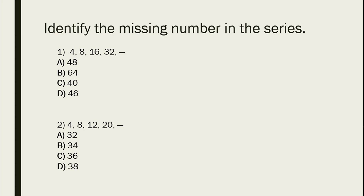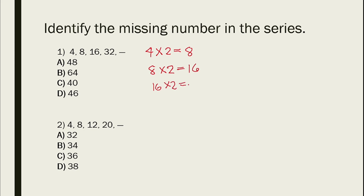As you have observed, these are just double numbers each time. The first is 4, so we multiply it by 2 that is equal to 8. Next, 8 times 2 equals 16, and 16 times 2 equals 32. So therefore, 32 times 2 equals 64.